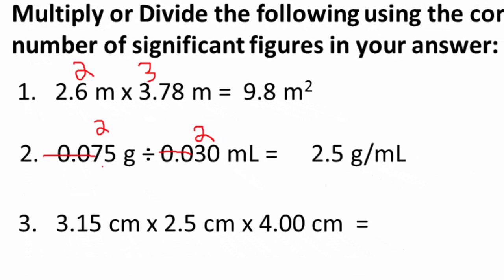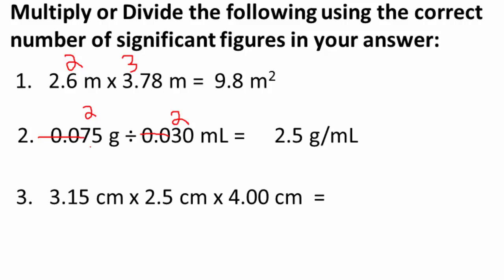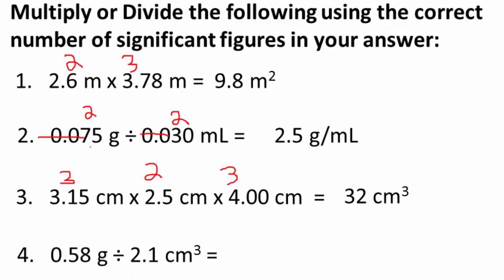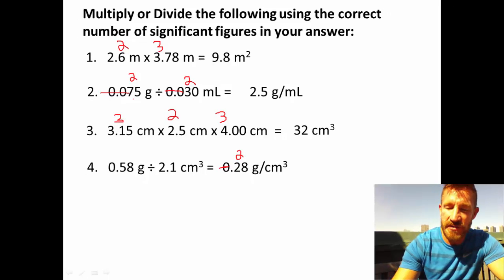The next problem calculates a volume as length times width times height, giving units of centimeters cubed — which is the same as a milliliter. Counting significant figures: the three numbers have 3, 2, and 3 significant figures respectively, so we want 2 significant figures in our answer, giving 32 centimeters cubed. The following division problem has both numbers with 2 significant figures, so the answer is 0.28 grams per centimeter cubed. The leading zero is just a placeholder and not a significant figure.